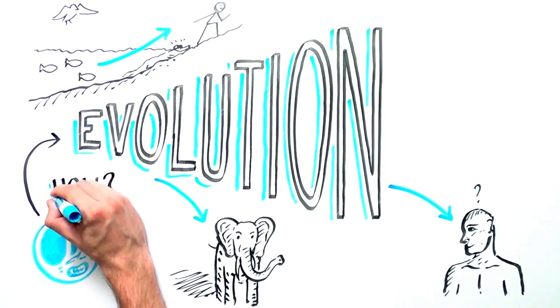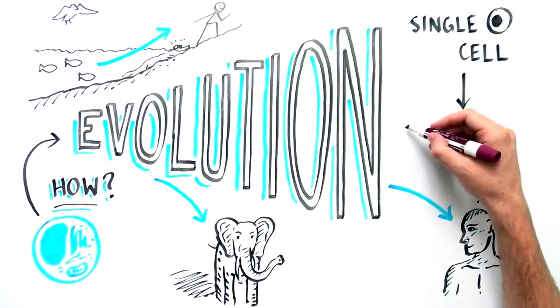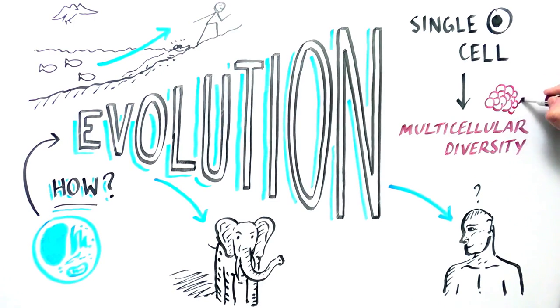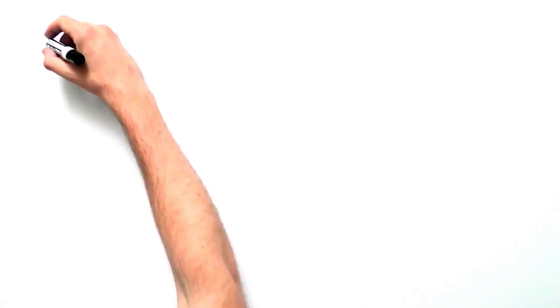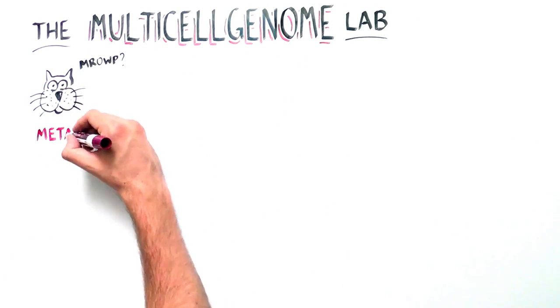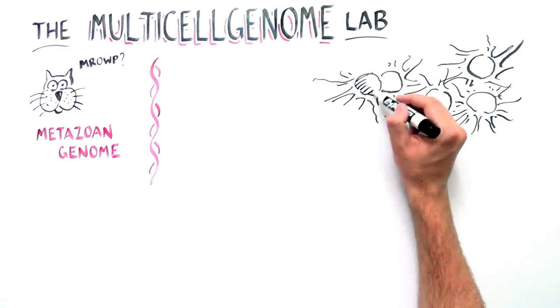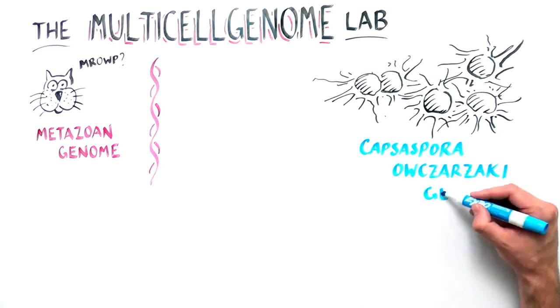This amazing fact begs the question, how did the first multicellular animal evolve from a single-cell ancestor to give rise to such diversity? The Multicell Genome Lab decided to unravel this intriguing mystery by comparing the genomes of metazoans to one of their closest unicellular relatives, the amoeba Capsospora azarzaki.